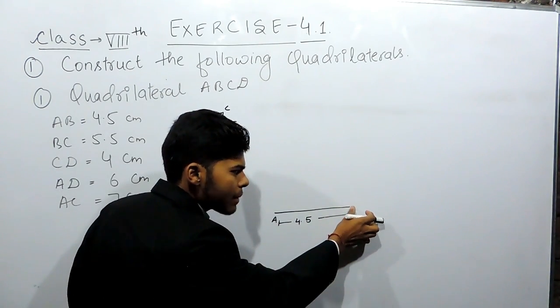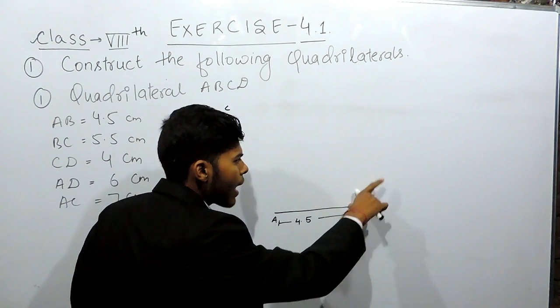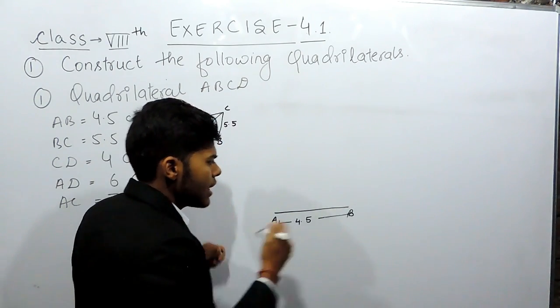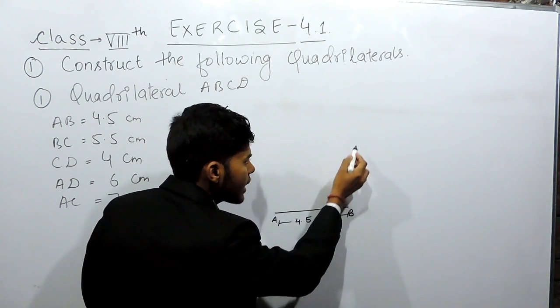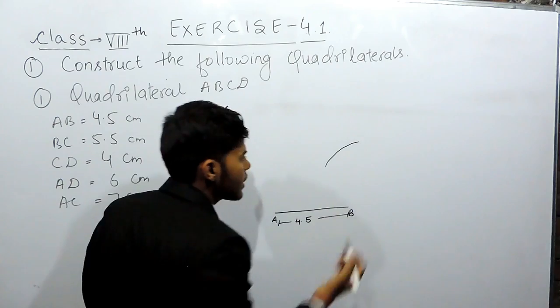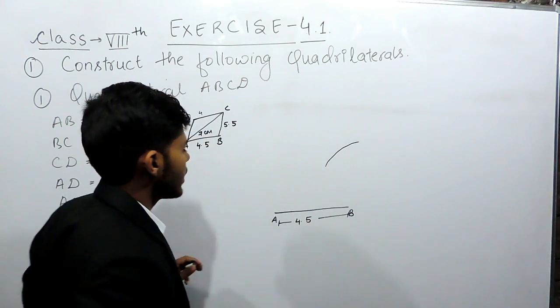Now, keep the sharp point of the compass at point B and mark an arc of 5.5 cm. Supposingly, this is the sharp point of the compass and I am marking an arc of 5.5 cm. Now, this is the arc of 5.5 cm.